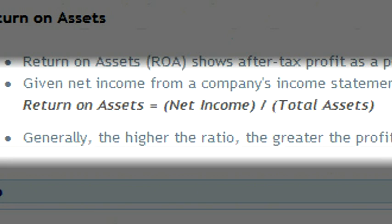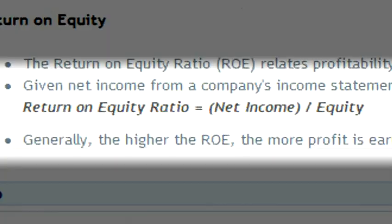The third set of ratios are profitability ratios. These help analysts understand how profitable the company is based on the number of assets as well as the number of liabilities that it has. The first ratio within the profitability ratio set is return on assets, calculated by taking the net income and dividing it by total assets. This helps people understand how efficiently a company is using the assets that it owns. The second ratio is return on equity, calculated by taking net income and dividing it by owner's equity. This helps analysts understand how well a company is utilizing the equity received from its owners and turning it into profits.